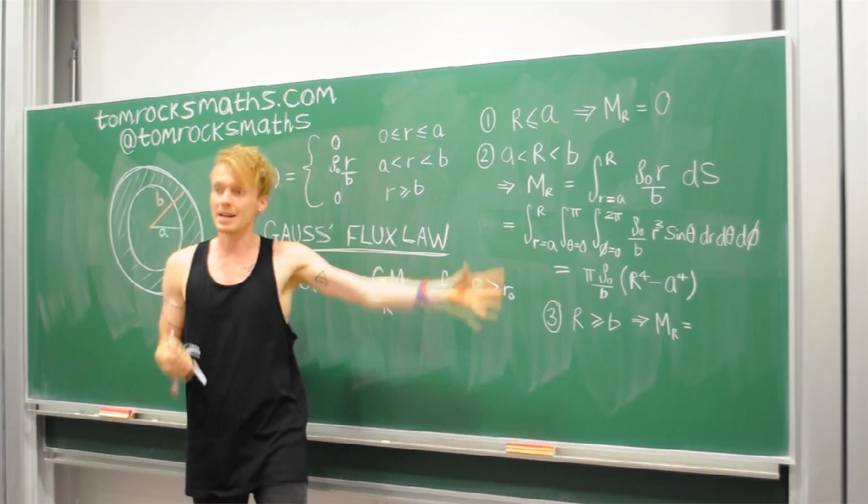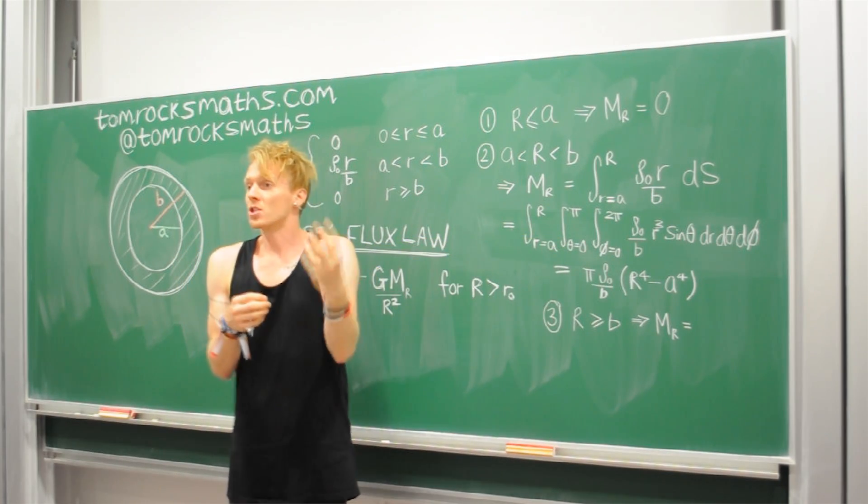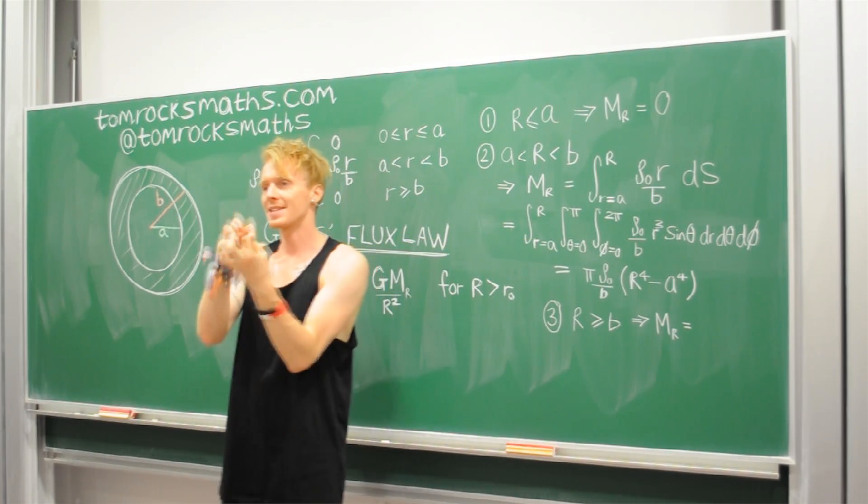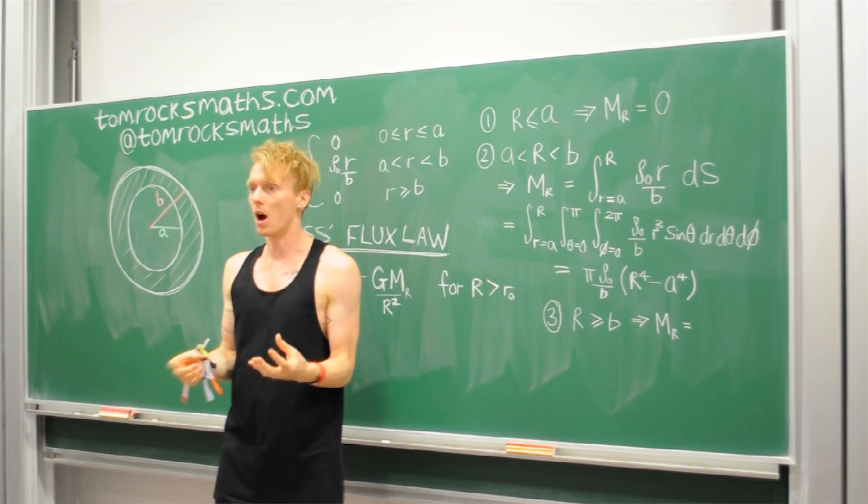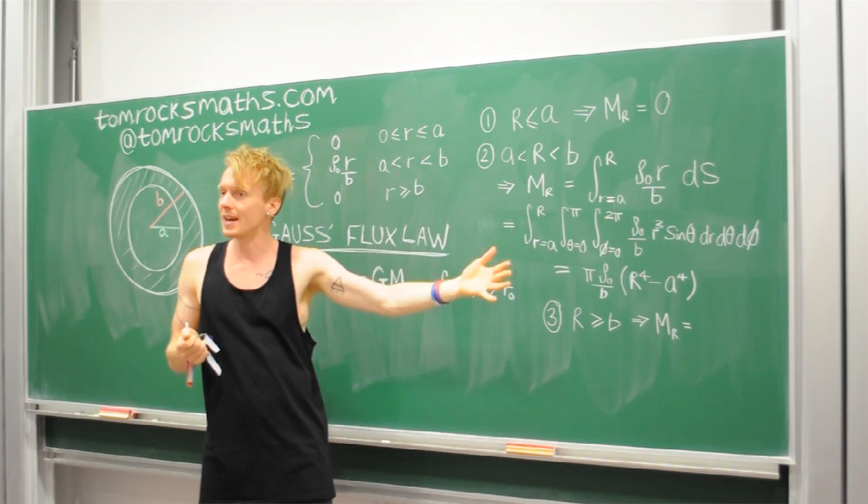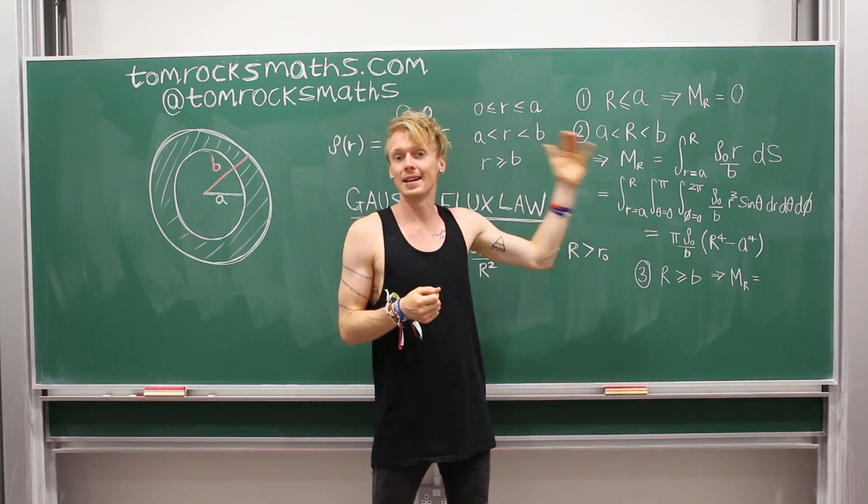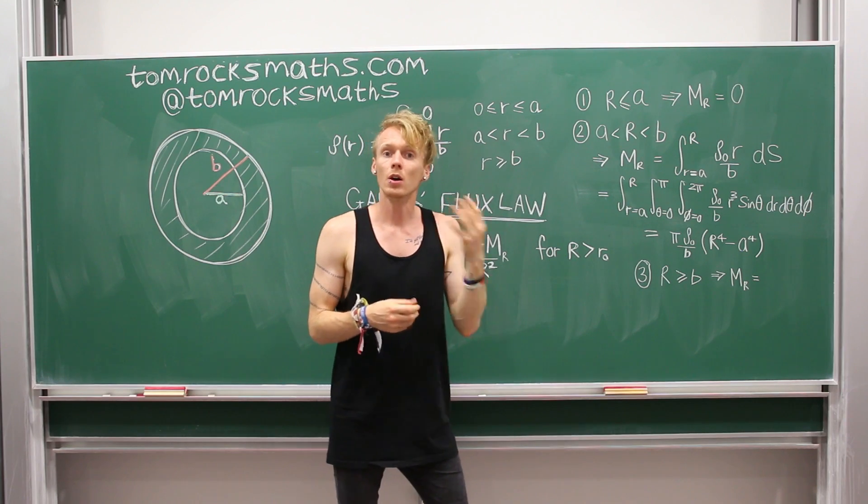So I've now done the integral of the density function, where we're integrating between the inner radius A and our radius capital R, which has to be less than B. And I've gone through the steps here. I won't bore you with the details. It's quite technical. But it's relatively straightforward if you understand integration and spherical polar coordinates.